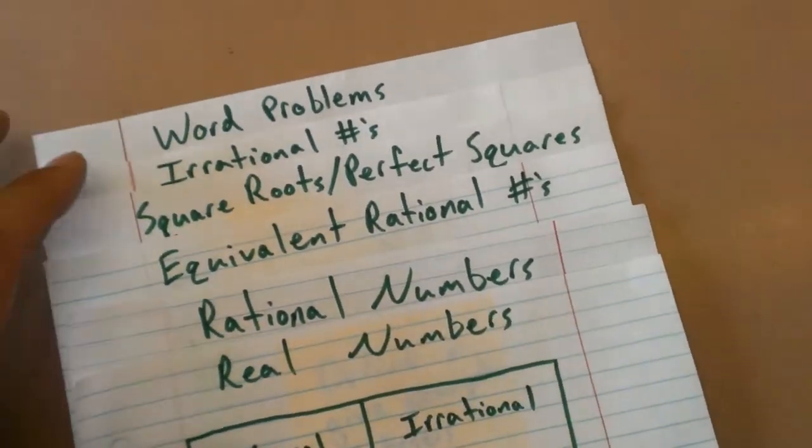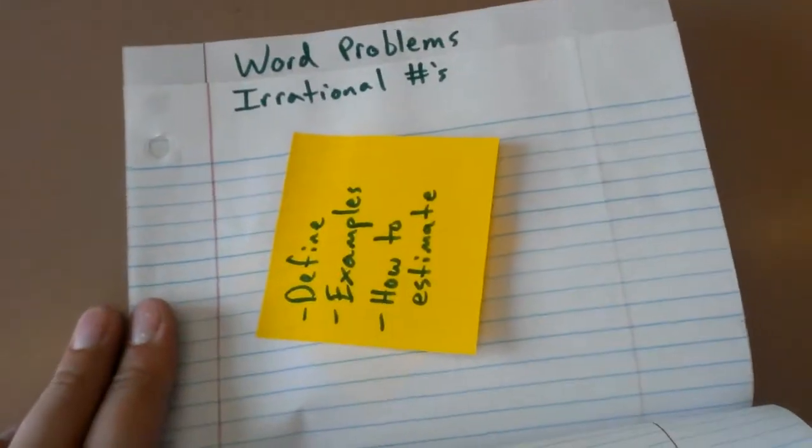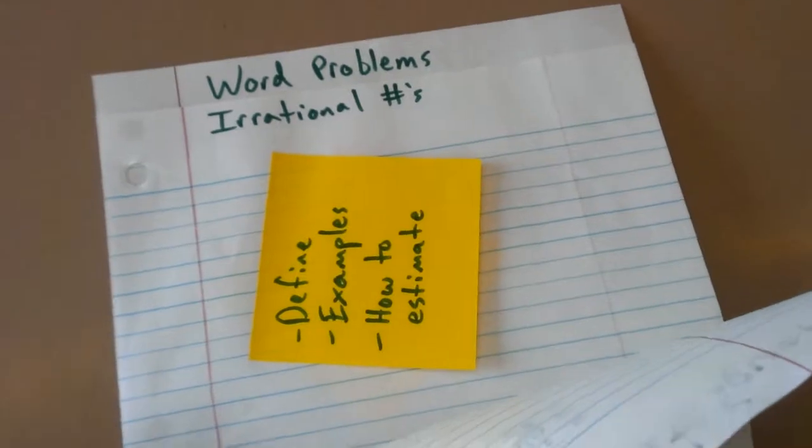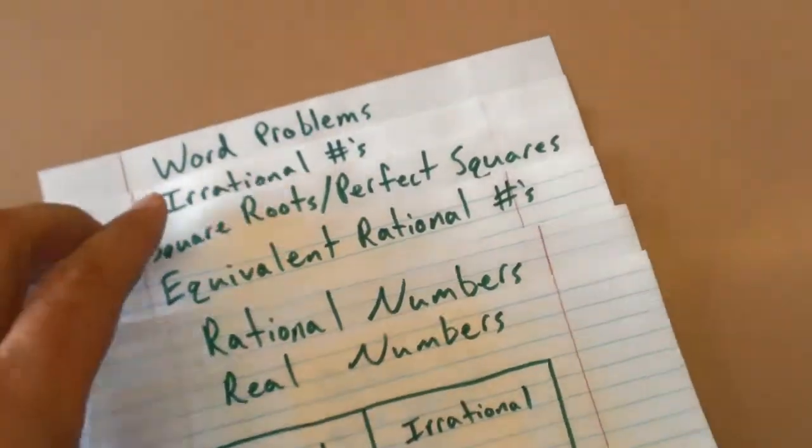In the second section of irrational numbers, they are to define irrational numbers, give examples of irrational numbers, and also explain how to estimate irrational numbers.